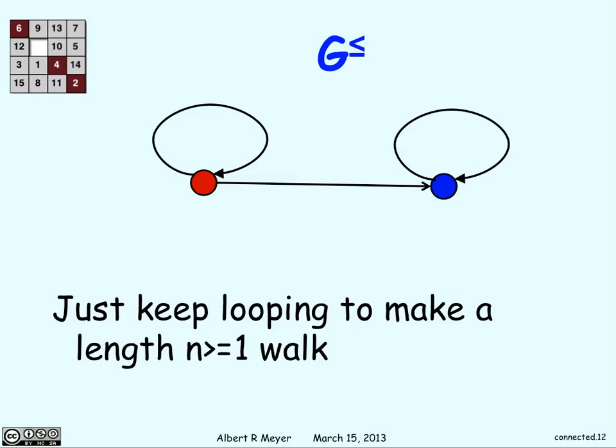If I want to get here from red to blue, I can get there in one step without those self-loops. But with the self-loops, I can just keep starting from red, go around to red as many times as I want, n minus 1 times, and then do this final step. So I can make a length n walk for any value of n greater than 1.